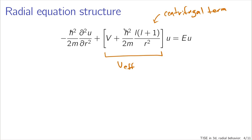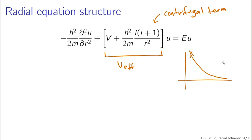This centrifugal term blows up as r goes to 0, making it hard for the particle to exist near the origin if we have any non-zero value of l. If l is zero, the centrifugal term disappears, but if l is non-zero, there is effectively a potential that pushes the particle away from the origin. It's called a centrifugal term in analogy with the centrifugal force in classical physics — for instance, swinging a ball on a string requires tension to keep it going in a circle. This potential takes care of that effective force pushing the ball away as you swing it.